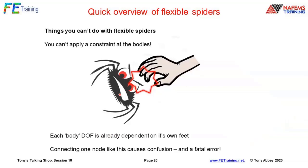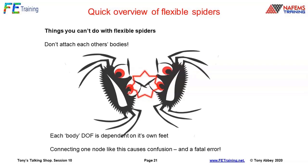Things you can't do with flexible spiders: you can't apply constraints to the body node of a flexible spider. Because the body is dependent on the feet, it's trying to track and follow the independent nodes — if you also constrain it, there's a conflict between the constraint and the independent node motion, causing a fatal error. You also can't attach two flexible spider bodies together — merging those two nodes creates a big conflict. Apply constraints to rigid spiders instead, since there the body is independent.